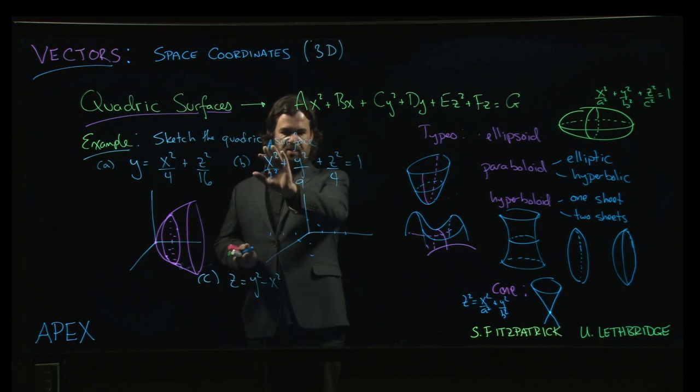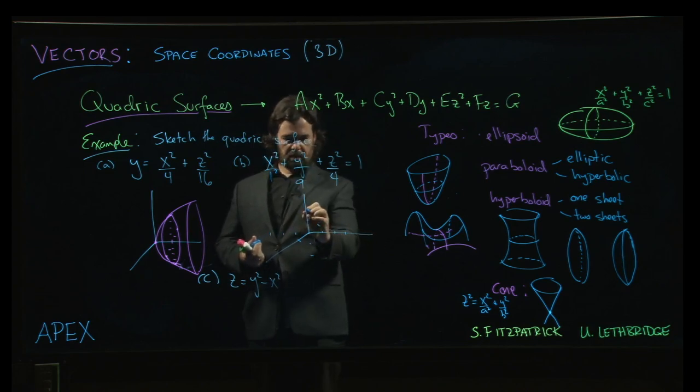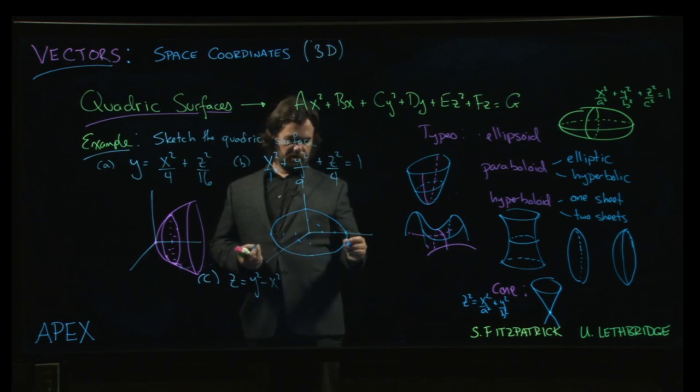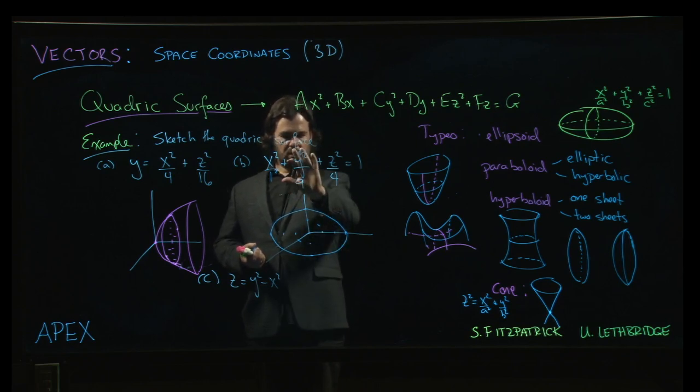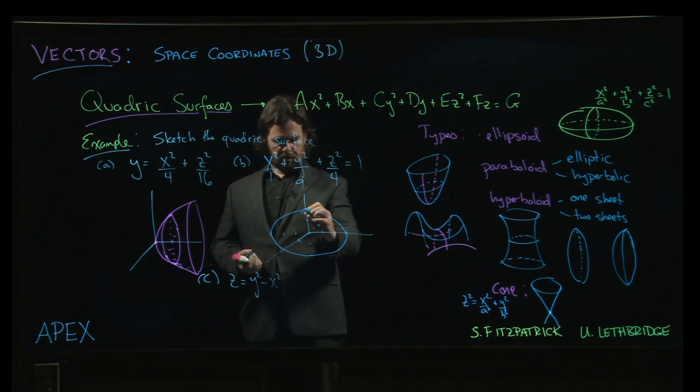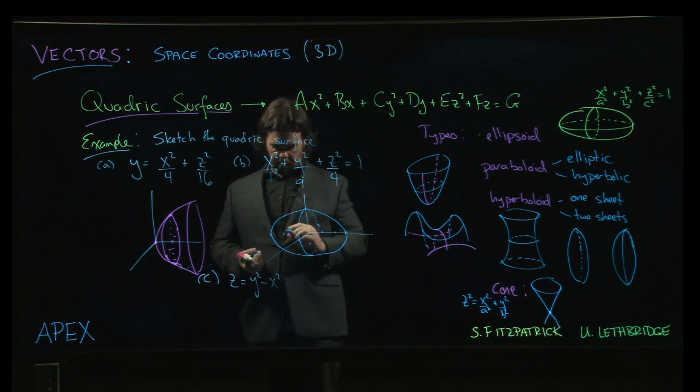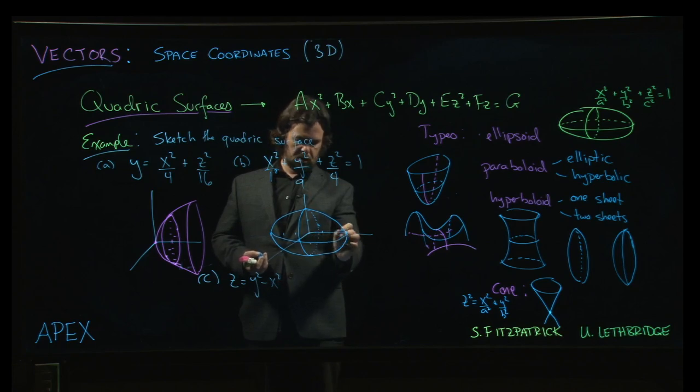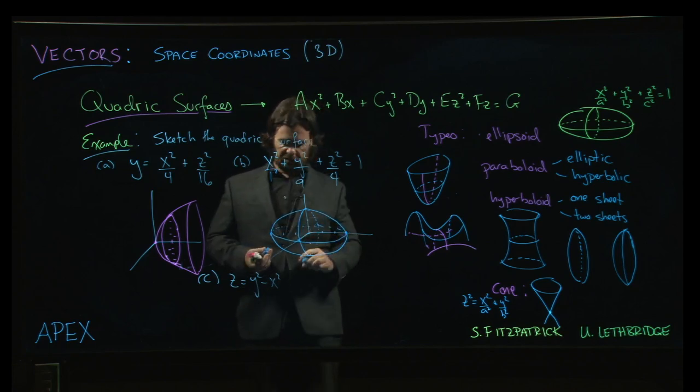Now, the easy ellipse to draw here is the x equals zero ellipse in the y-z plane. So we draw that one in. The next one is probably, I don't know, we can set y equal to zero. The ellipse in the x-z plane is going to pass through there and there. Then we have the ellipse in the x-y plane passing through there, going around like so.